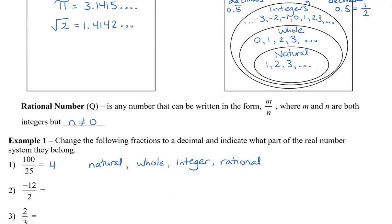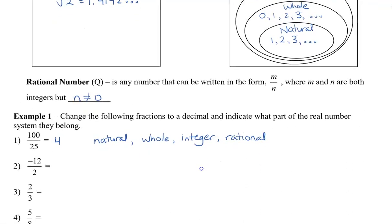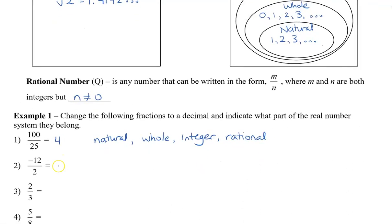All right, our next one is negative 12 divided by 2. So that is equal to negative 6. Because it's a negative number, the only thing that it can be is it can be an integer. And all integers are also rational.